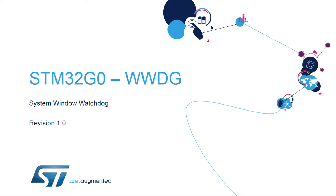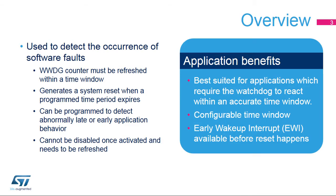Hello and welcome to this presentation of the STM32 system window watchdog. It will cover the main features of this peripheral used to detect software faults. The window watchdog can be programmed to detect abnormally late or early application behaviour. It is best suited for applications required to react within an accurate timing window.